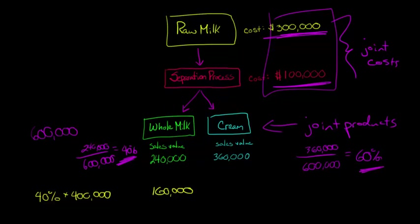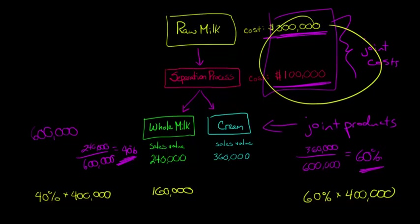Now for the cream, we're going to do a similar thing. We're just going to take that 60% and multiply that by the total amount of joint costs that need to be allocated, $400,000, and that is going to yield $240,000.